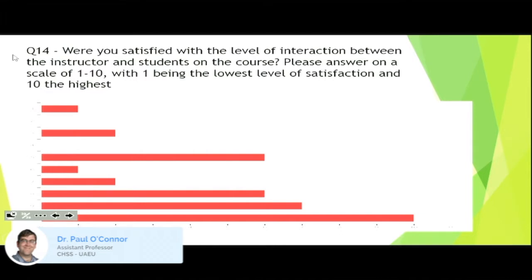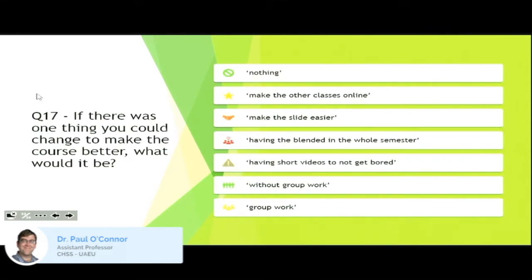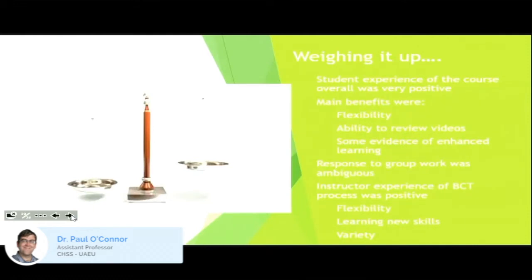On what they found least useful: distributing the work in groups was mentioned — a reference to the group work difficulties. On the final open question — if there was one thing you could change to make the course better — some said nothing; many said make more classes online or have blended for the whole semester; others said make the slides easier and make shorter videos; and the group work issue came up again, with some wanting no group work.